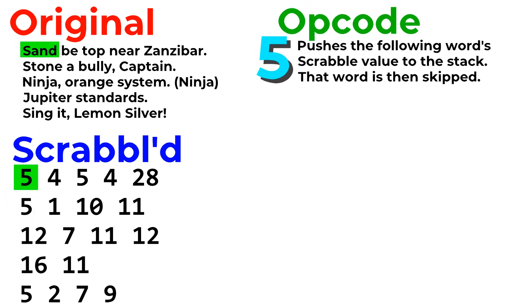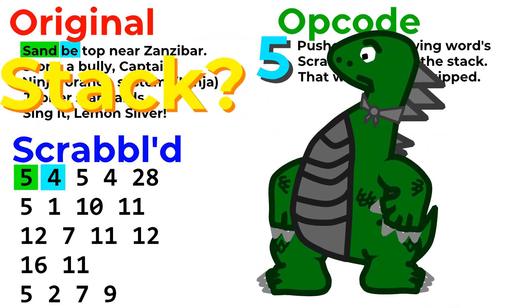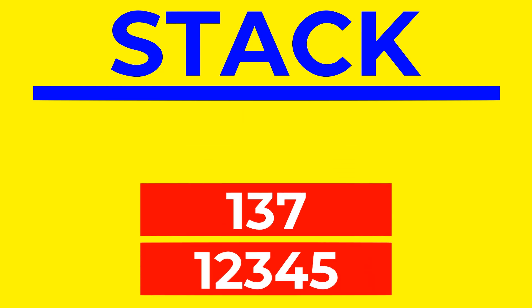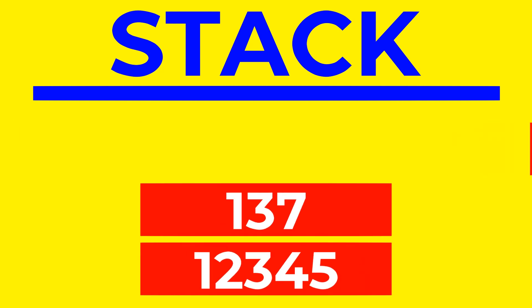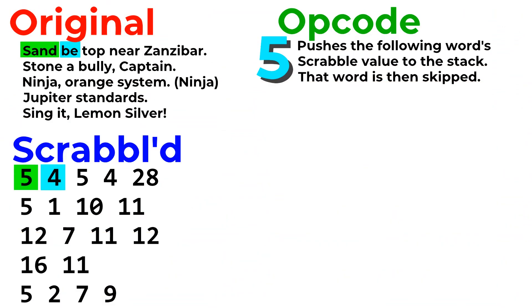The first opcode that this program reads is 5. Words with a Scrabble value of 5 push the next word's value onto the stack. Hold on — just what is a stack? A stack is something that I should seriously make a video dedicated to. But anyway, a stack is what Beatnik uses to store numbers so that we can use them later. Numbers can be put on top of the stack, called pushing, and they can be removed from the stack, called popping. The first two words of code push specifically the number 4 to the stack.